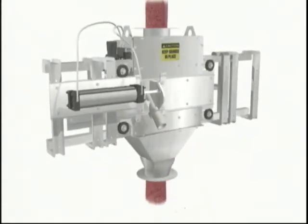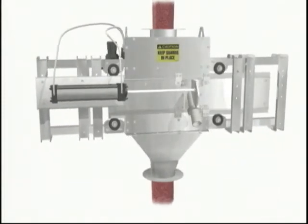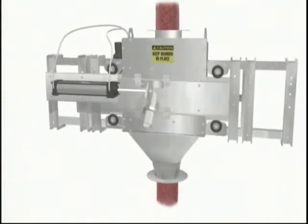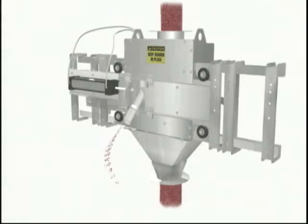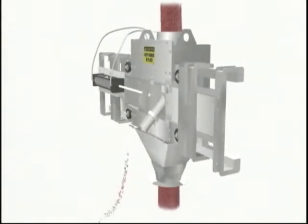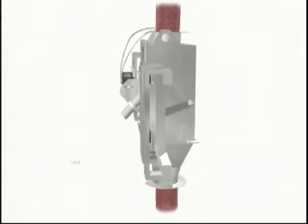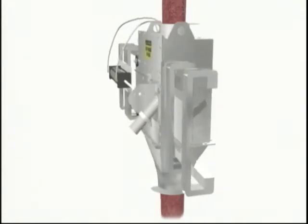Product is sampled by the Model GA when a solenoid-controlled air cylinder moves a pelican-type diverter across the entire product flow, capturing a sample, then discharging it through the pelican tube.